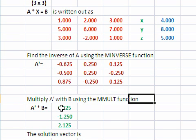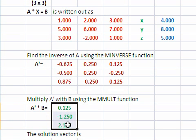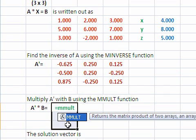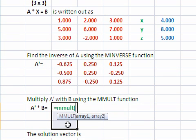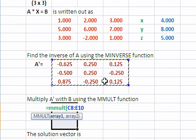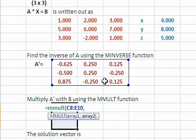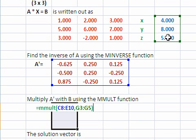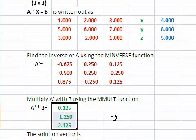We can now solve for x by multiplying the inverse matrix times the B matrix equals MMULT. That's the matrix multiplication function of the inverse matrix times, you use a comma in Excel, the B matrix. Close parenthesis. Control, shift, enter. And those are our answers.